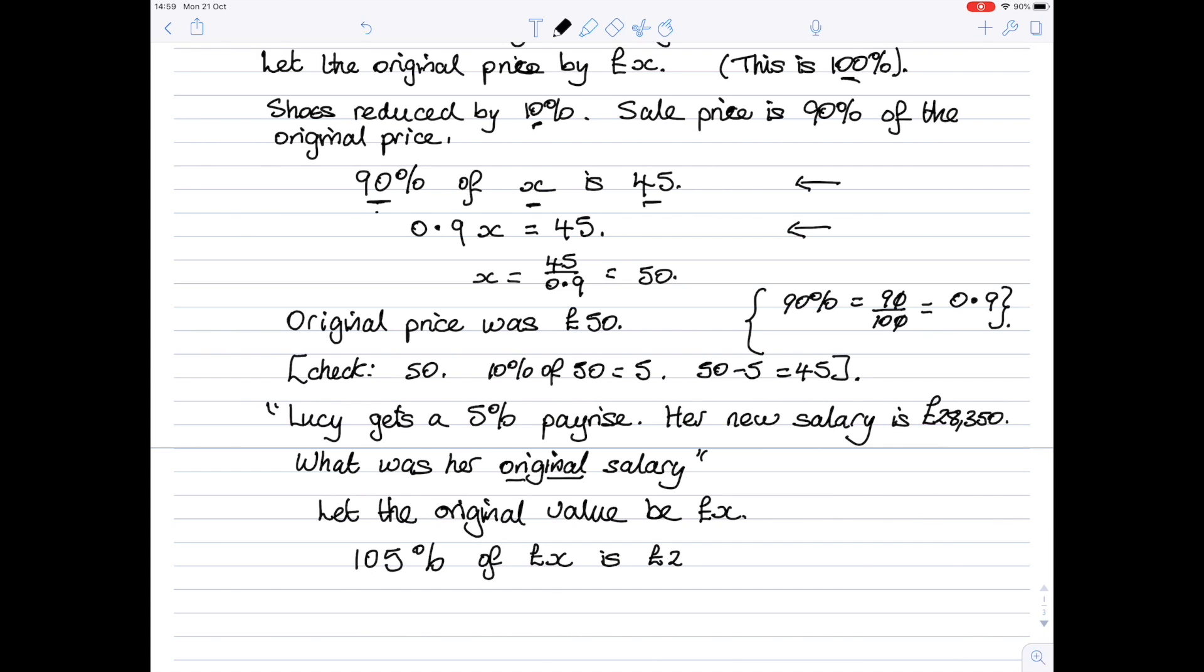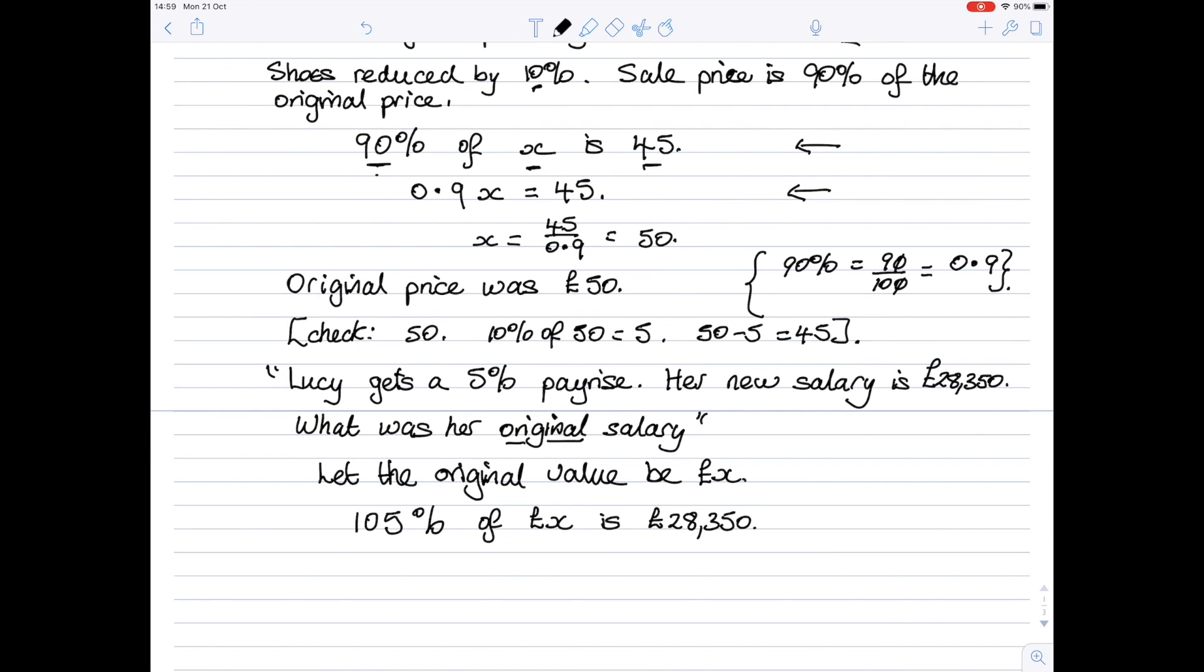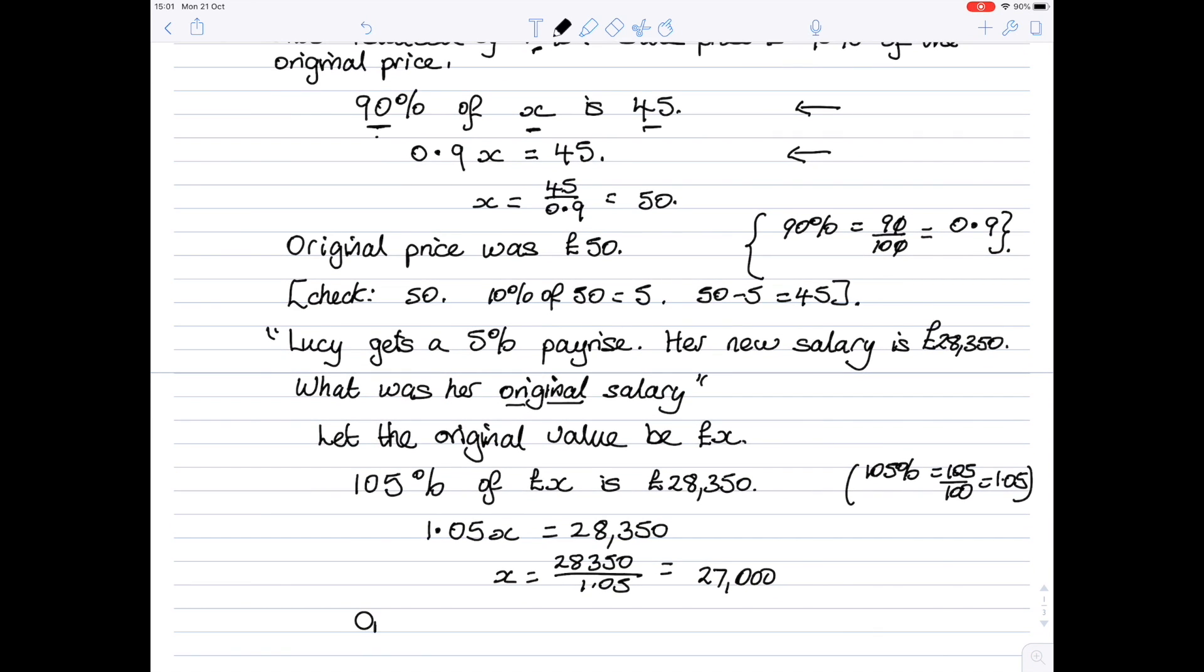Convert that English sentence into maths. 105% is 105 over 100, which is 1.05. So the mathematical formulation is 1.05 of the original is 28,350. Again, a simple sum: divide both sides by 1.05, so it's 28,350 divided by 1.05, and that gives you 27,000.